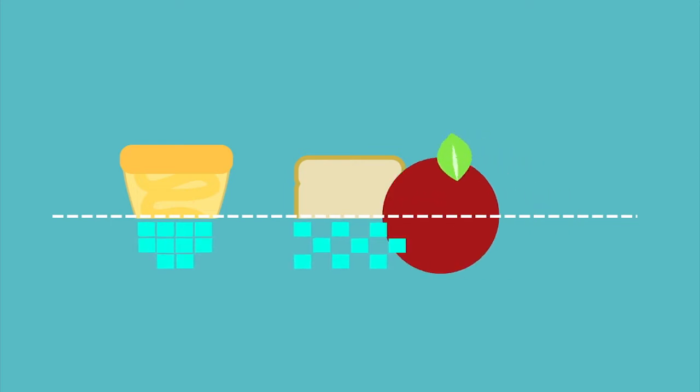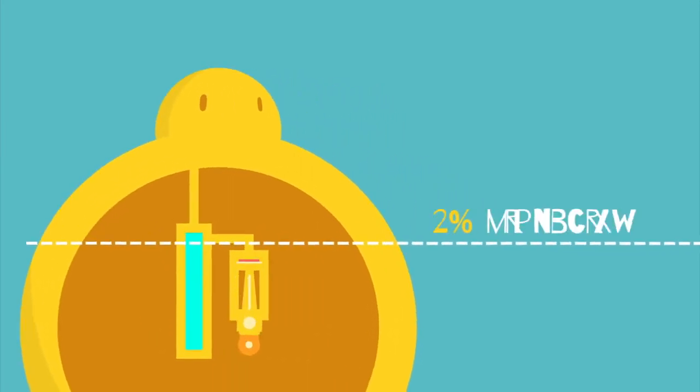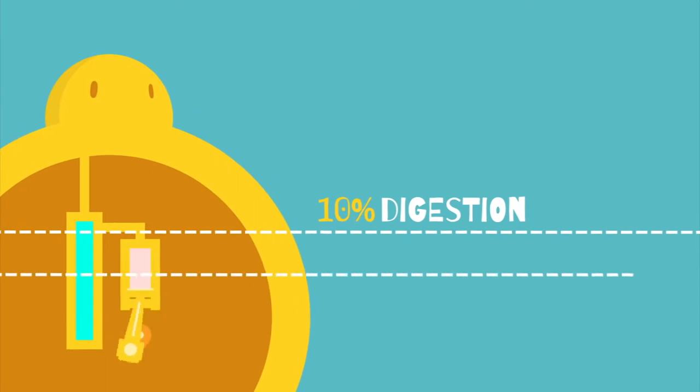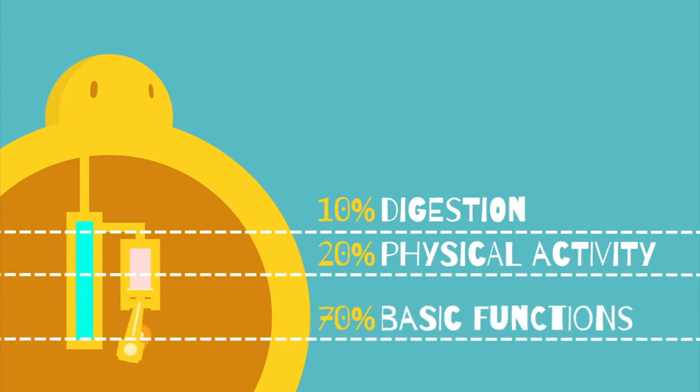That energy is released during digestion and stored in other molecules that can be broken down to provide energy when the body needs it. It's used in three ways: about 10% enables digestion, about 20% fuels physical activity, and the biggest chunk, around 70%, supports the basic functions of our organs and tissues.